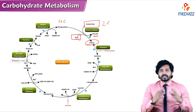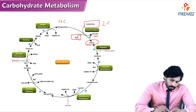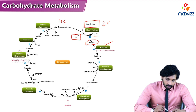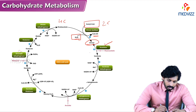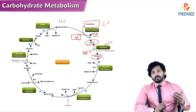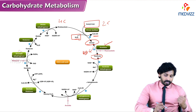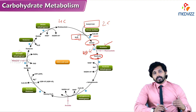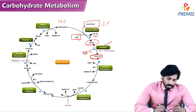Citrate undergoes modification by the enzyme aconitase. Aconitase removes a water molecule to form isocitrate — in the previous reaction we added water, and here we are removing water. So citrate is converted to isocitrate, mediated by the enzyme aconitase.